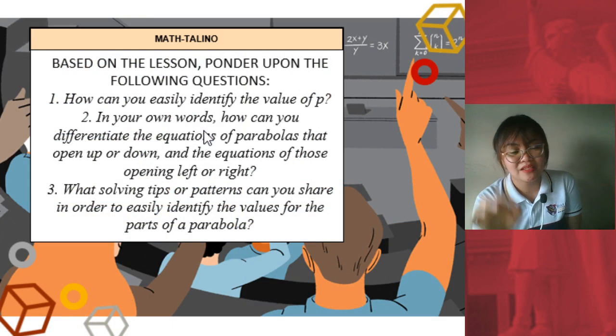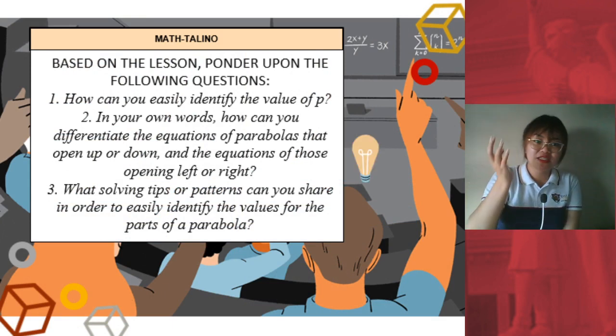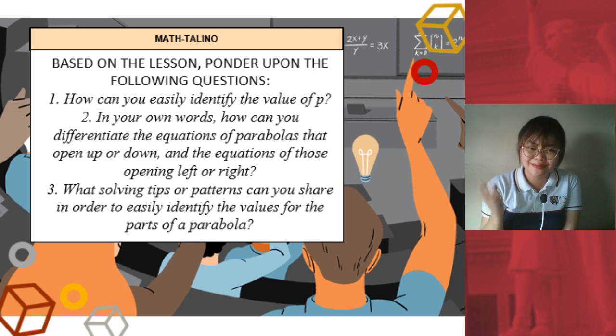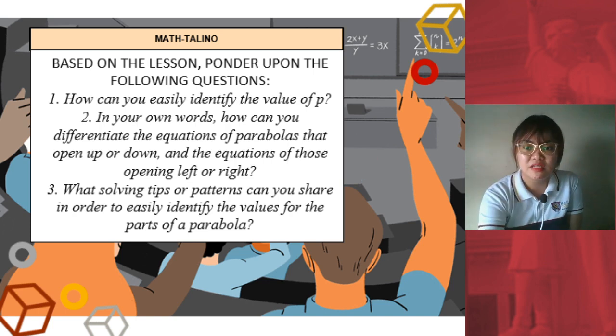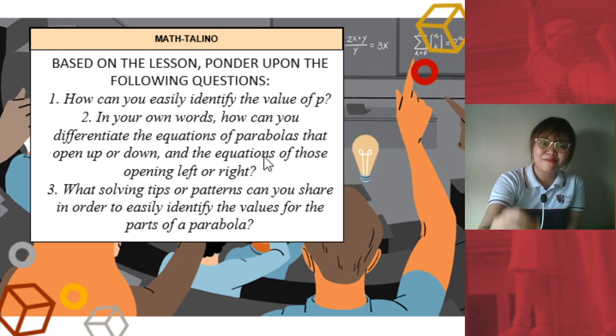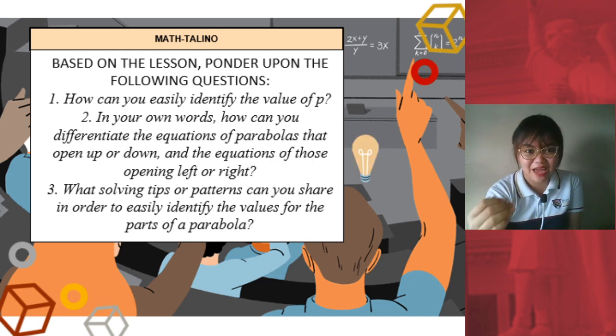So, these are the questions that I want you to think of. How can you easily identify the value of p? What's the shortcut that I told you? You have to divide the numerical coefficient by 4. Now, in your own words, how can you differentiate the equations of parabolas opening up or down, the equations of those opening left or right? So, you just have to think of ways on how to remember these things and what patterns were you able to see or find. So, with that, see you on the next video. Thank you so much.